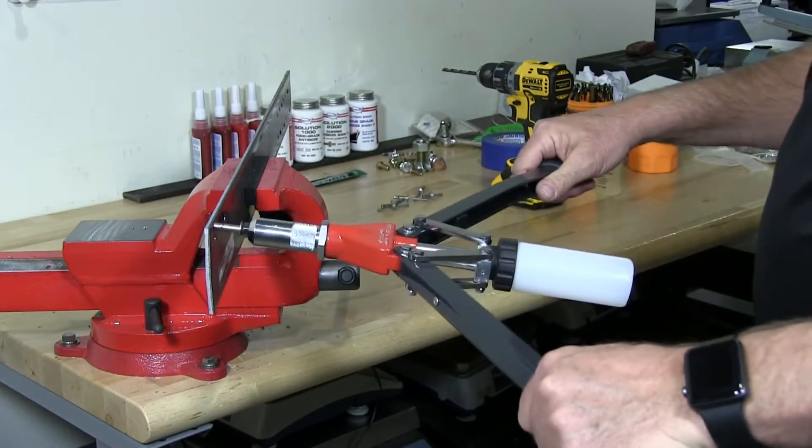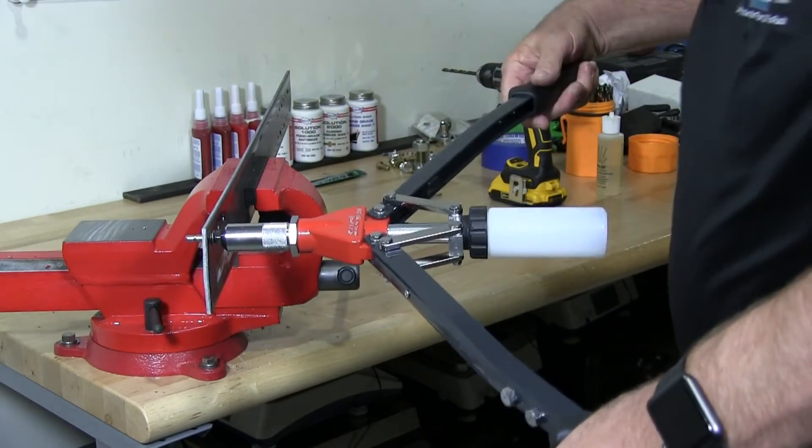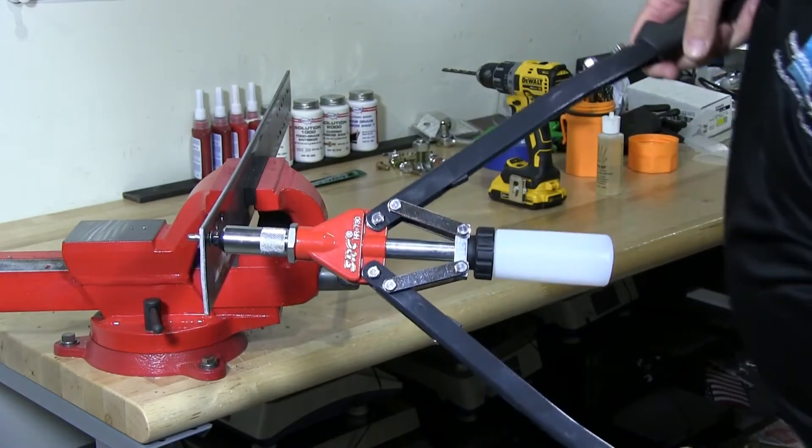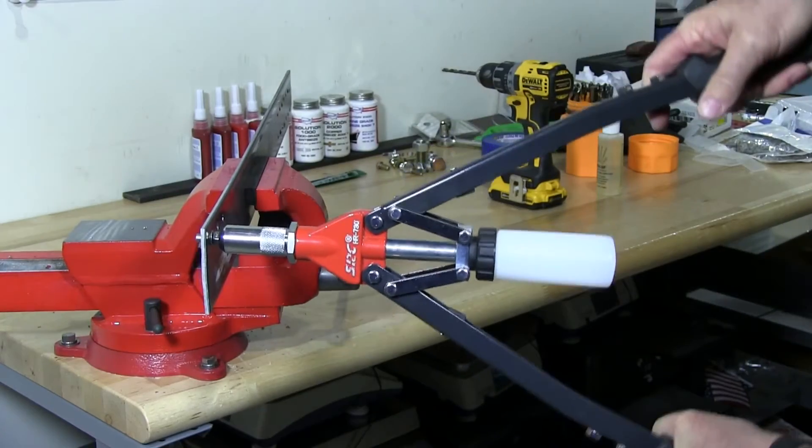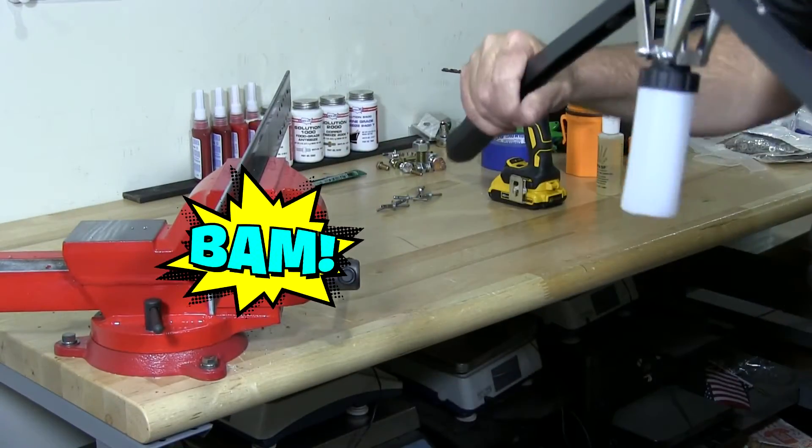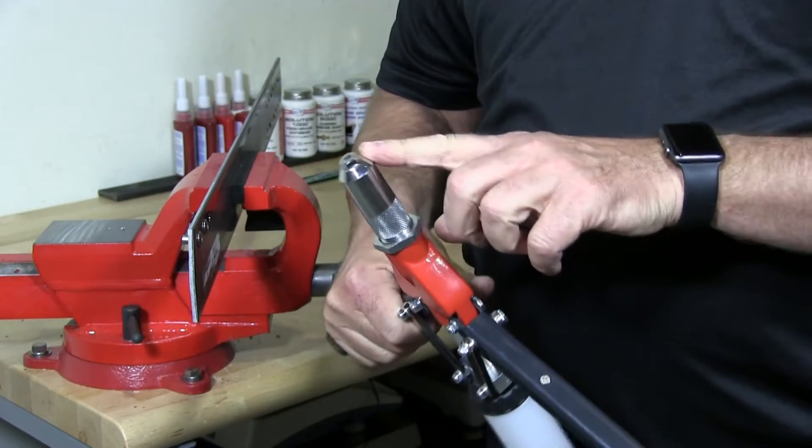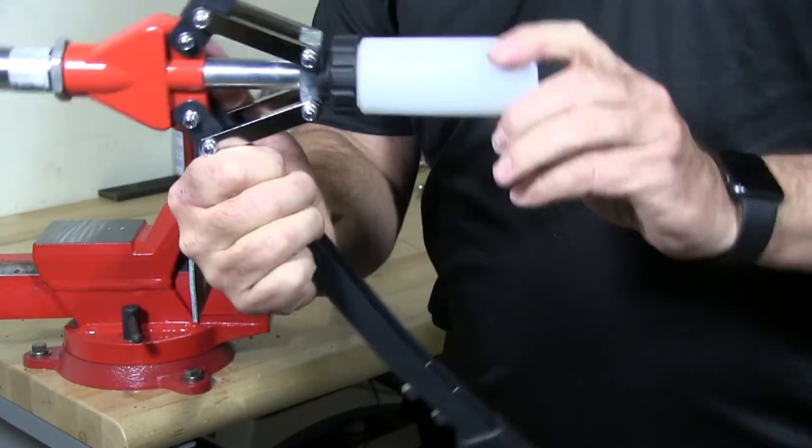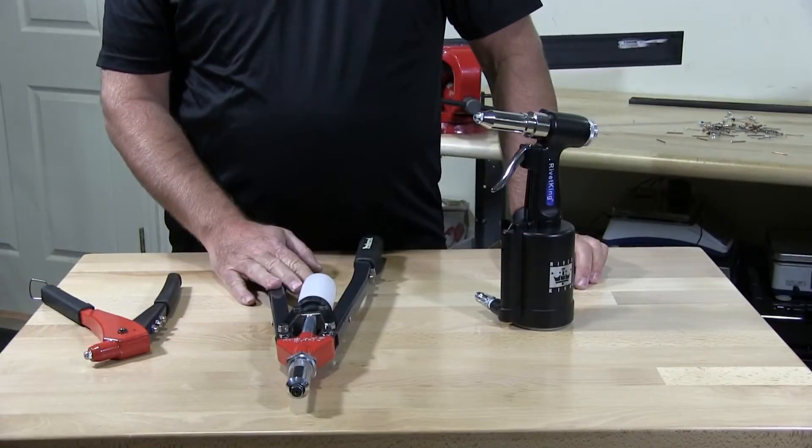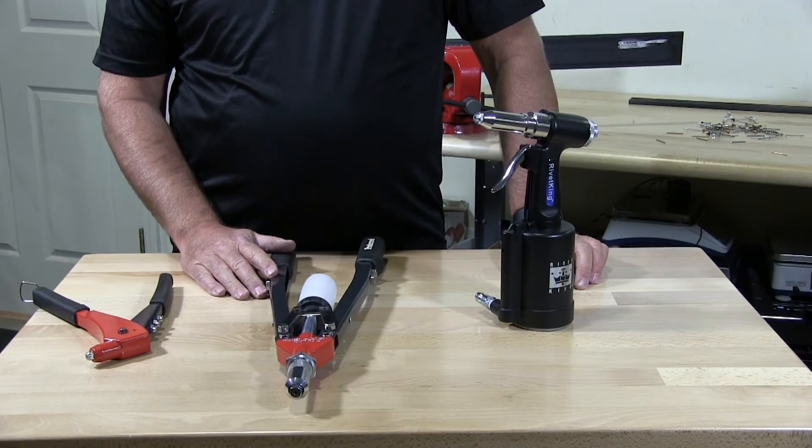I'm going to insert it into the hole and now I'm going to crimp the rivet. One and two. Bam! I don't know if you heard that but the pieces of the mandrel that are left over are actually dropping in here into this little cup. This is for large rivets. Stainless or aluminum. This will handle large rivets.